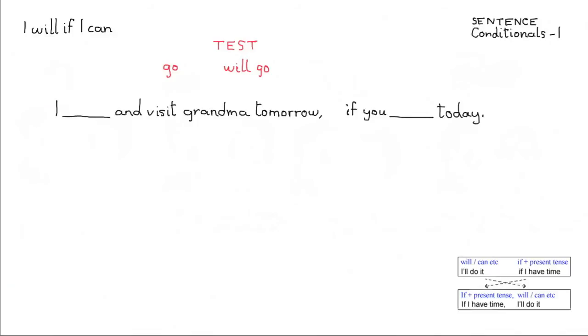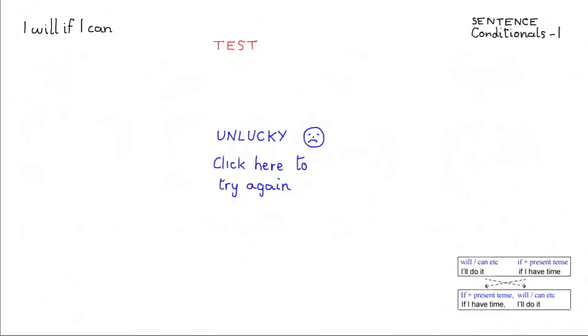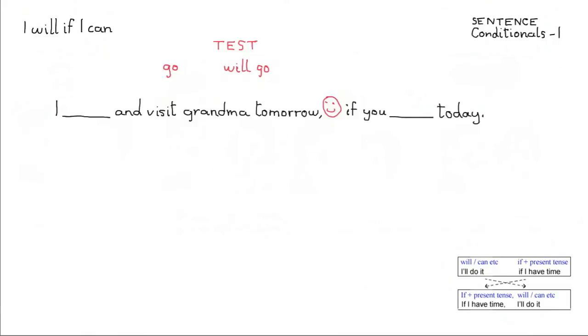So first of all, do the first half of the sentence. Sorry, no, I'm afraid not, wrong answer, try again, click here. Yes, well done, that's right, I'll just write the answer in there, I will go and visit grandma tomorrow.